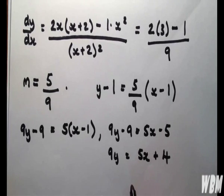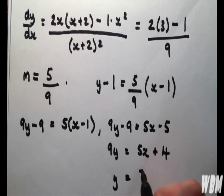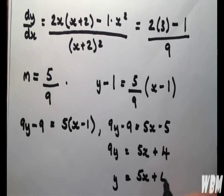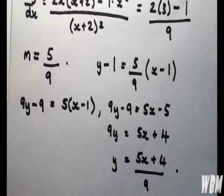And if we divide throughout by 9 to get it in terms of y, we have that the equation of a tangent line over y equals x squared over x plus 2 at (1,1) is equal to y equals 5x plus 4 over 9. Thank you for watching.